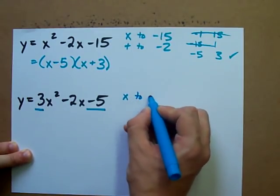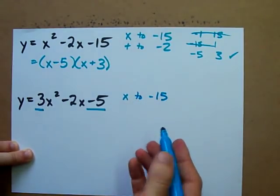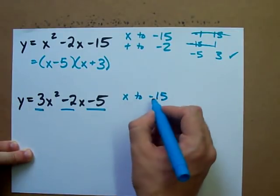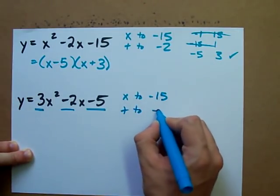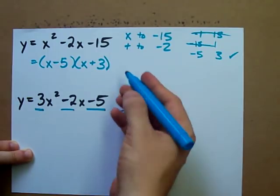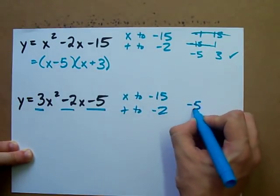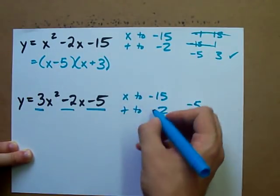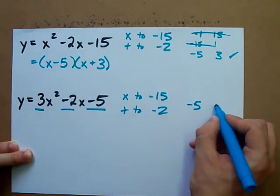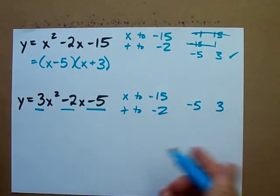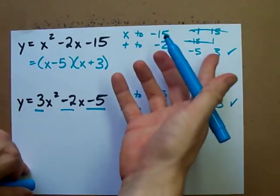You want them to multiply to negative 15 and add to negative 2. Now I rigged this so that it would be the same thing. Two numbers that multiply to negative 15 and add to negative 2 are obviously negative 5 and 3. We already found it.